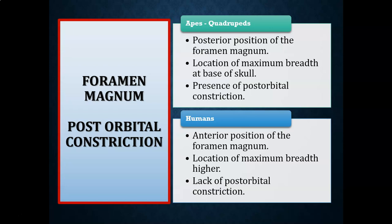The foramen magnum and postorbital constriction are cranial features we compare between apes and humans. Apes are predominantly quadrupeds and show a posterior position of the foramen magnum — the hole where the spinal column connects to the skull. The widest point of the skull is near its base, and apes display what we call postorbital constriction.